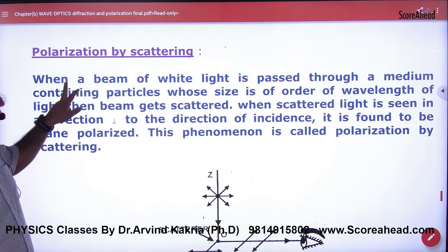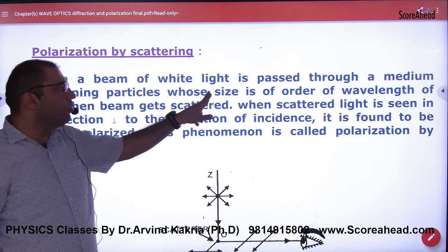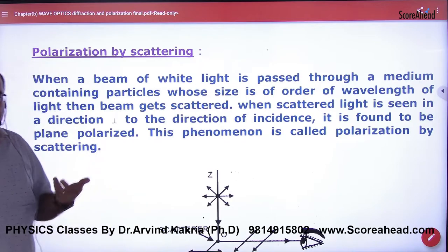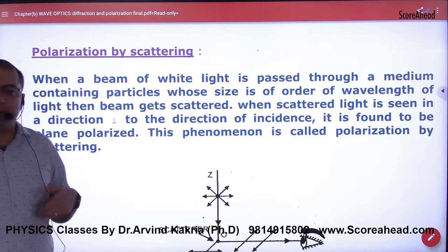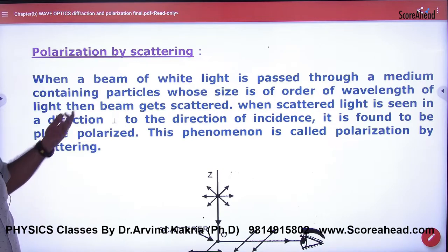This is what he is saying: when a beam of light is passed through a medium containing particles whose size is of order of wavelength of light - if wavelength of light is lambda and particle size is approximately lambda - then the light will scatter.